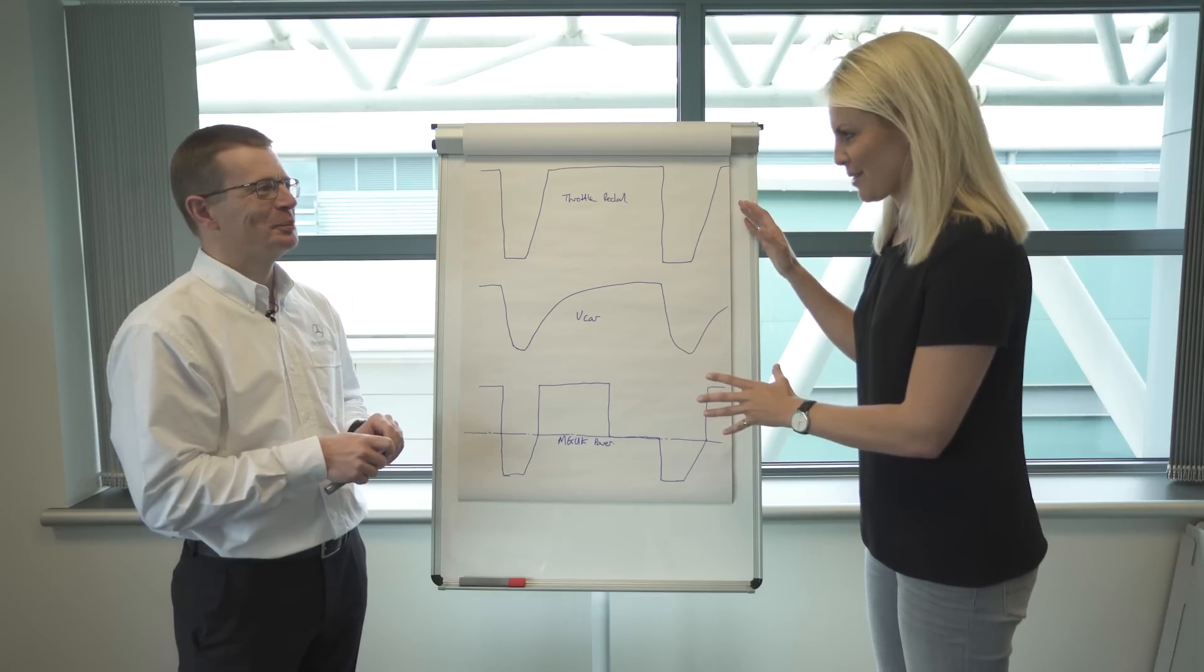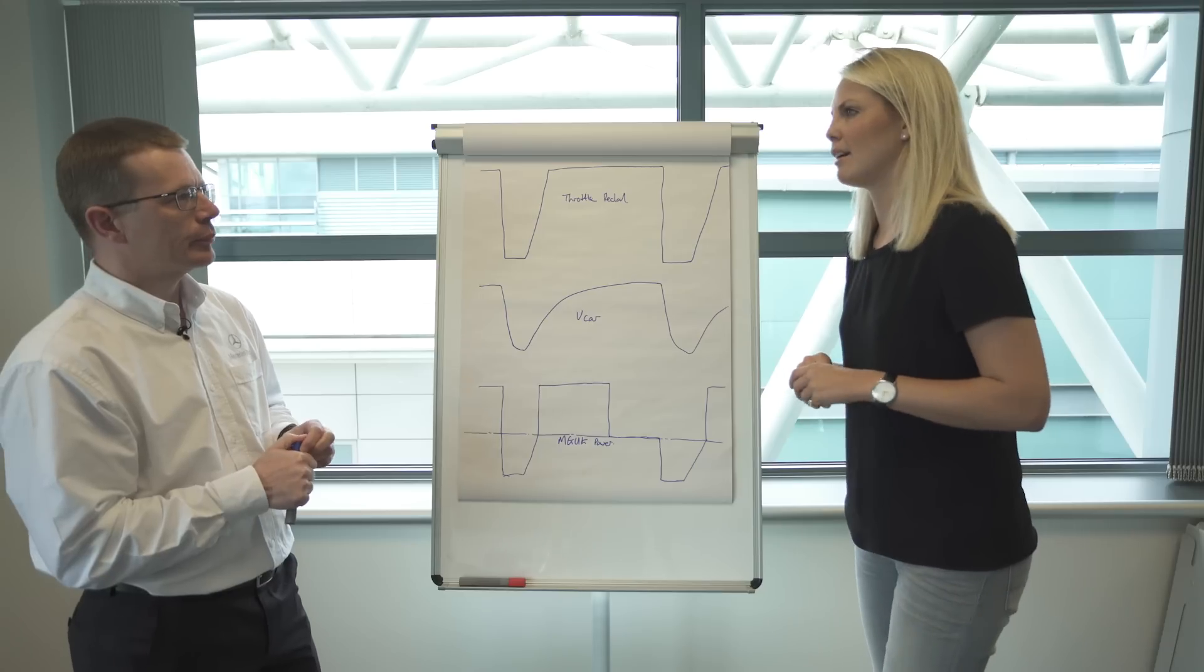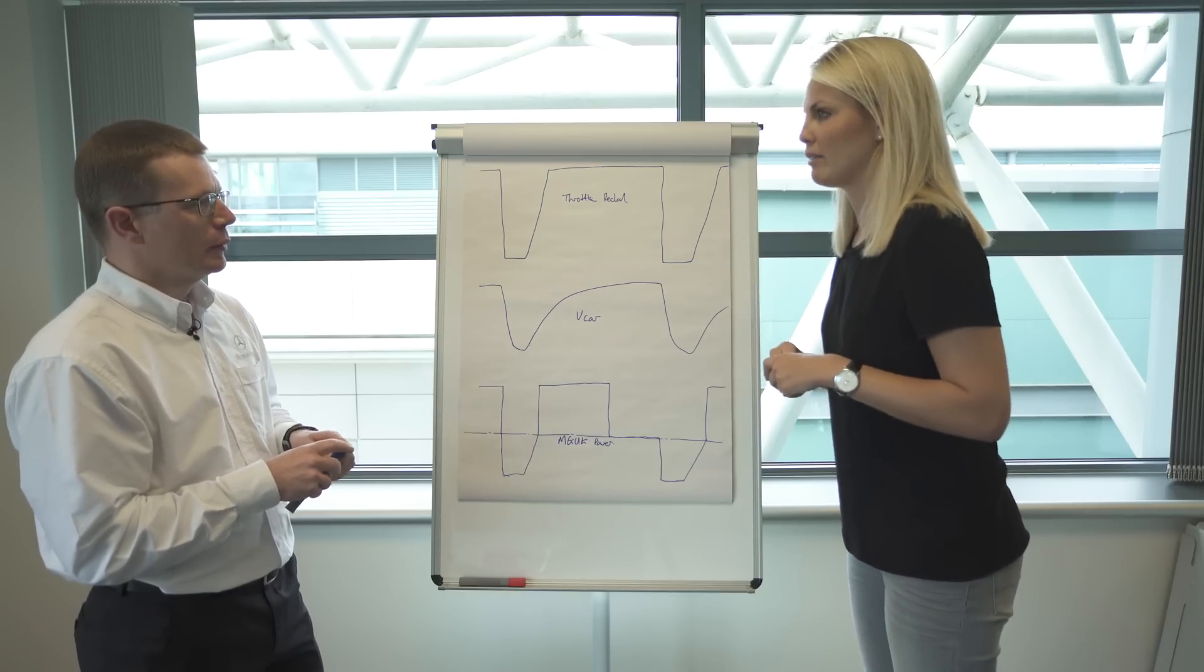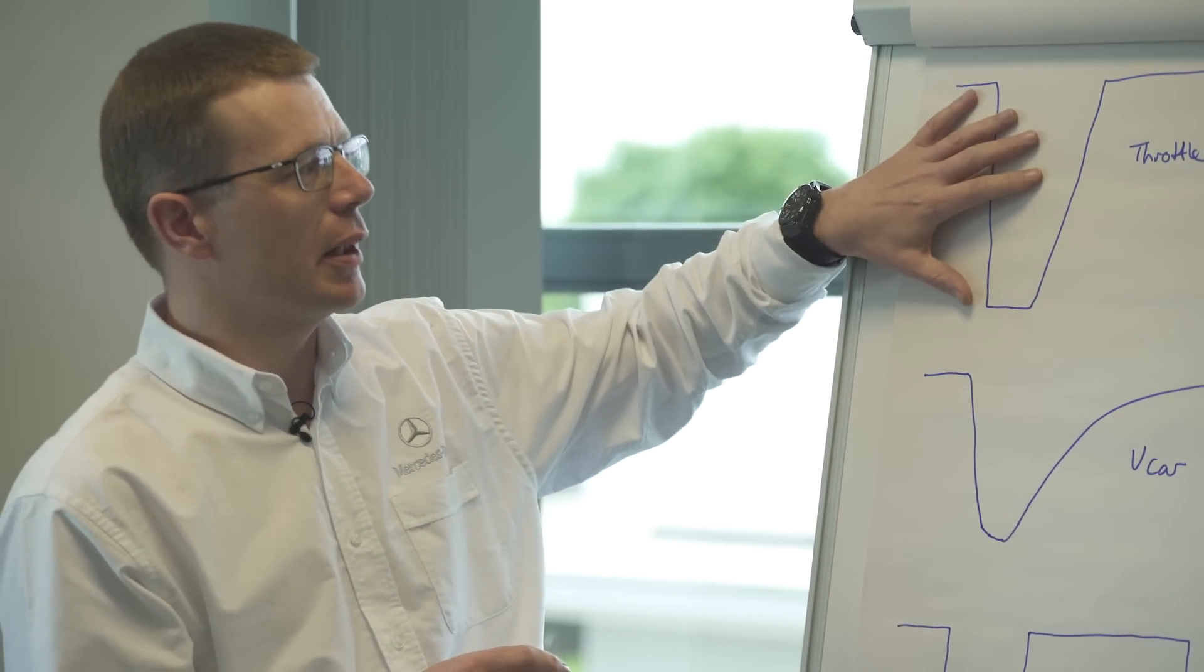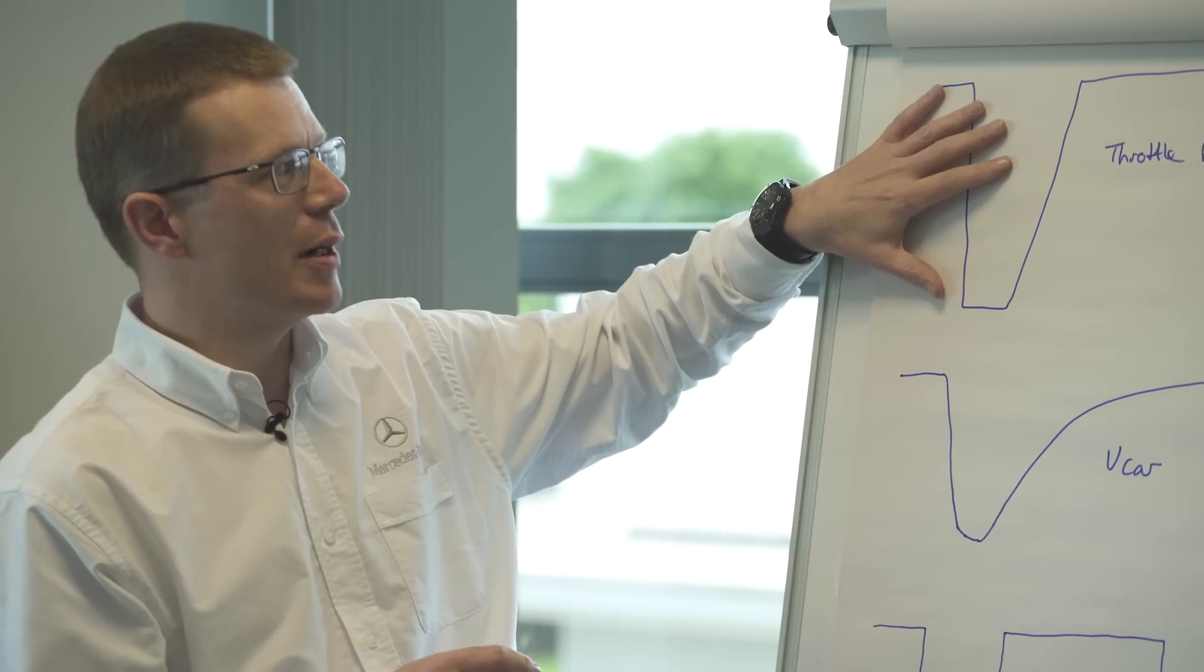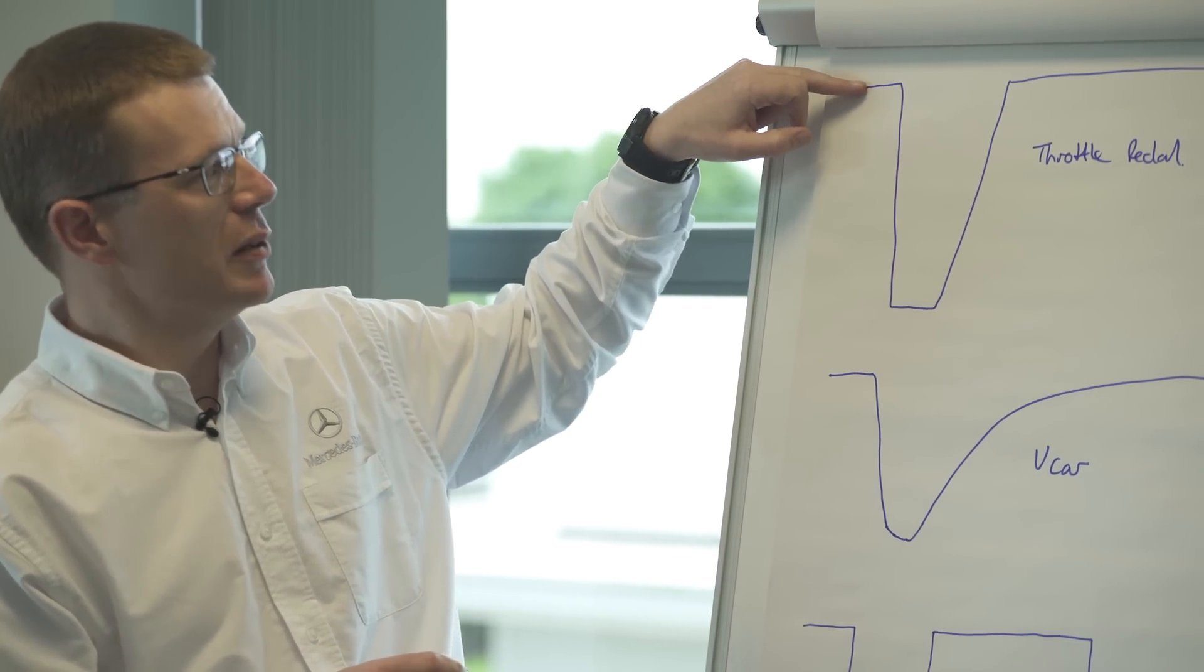So you've done some lovely drawings for us on the board here. Can you explain what each of these show and how it affects the car lap by lap and the driver? So this is three traces, throttle pedal, the right-hand pedal for the drivers. And what I'm showing here is that it's coming into a corner, so at full throttle, lifts off...